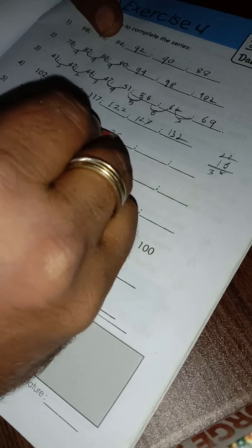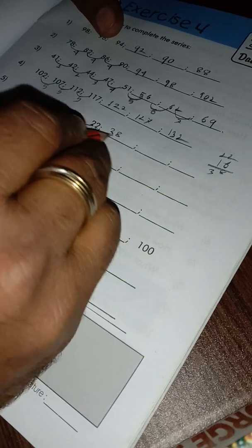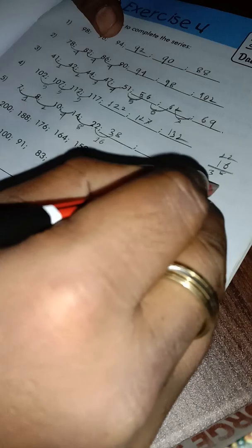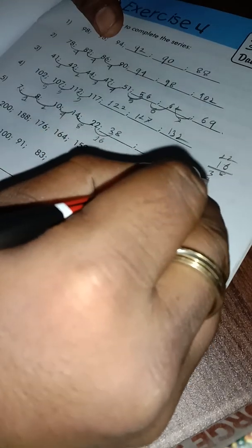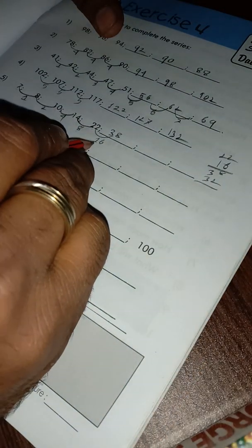So 38. Here is difference 16. Now 38 plus 32, double of 16, we will add the difference, double difference.